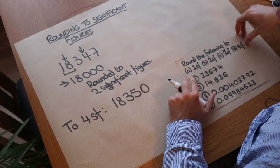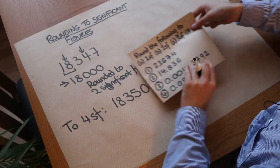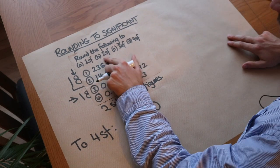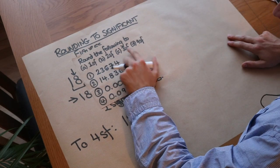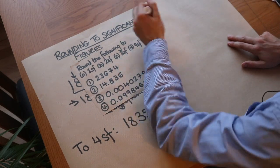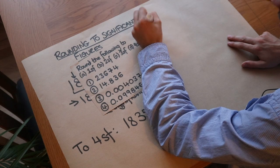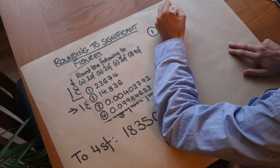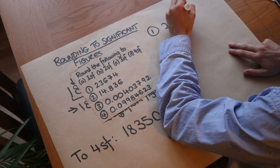So let's do these examples. I want us to round the following numbers to one significant figure, two significant figures, three significant figures, and four significant figures. The first number is 23,674.